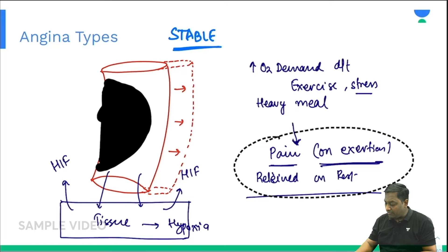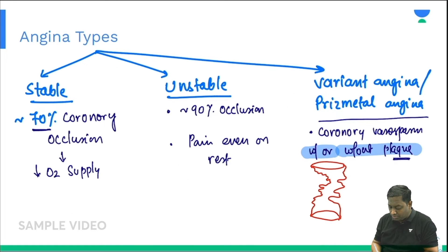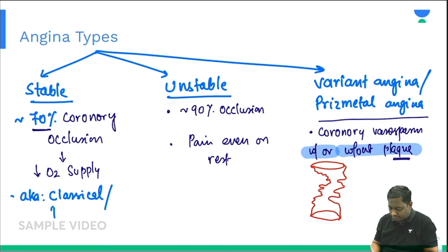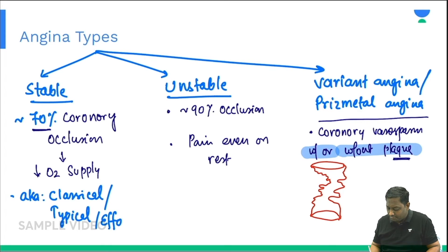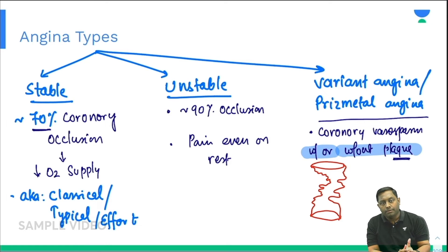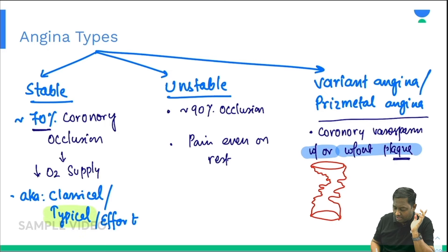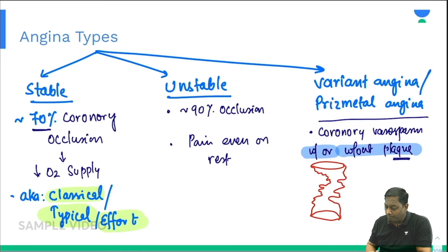This very specific, very typical finding — pain on exertion, relieved upon rest — is the classical presentation of stable angina. This classical finding is also why it is given multiple names: classical angina, typical angina, and since the pain occurs due to effort, it is also called effort angina. All these names refer to the same condition.